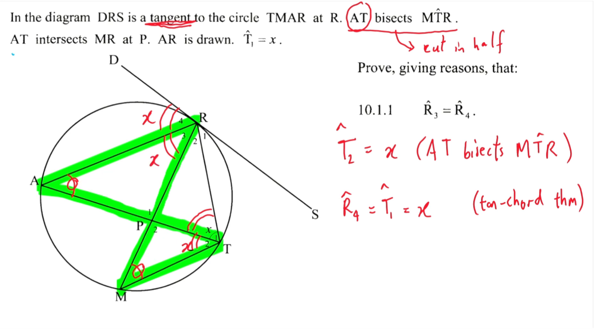R3 is also equal to x. Therefore we can say R3 is equal to T2, and your reason here would be angles in same segment. Further to this, we know T2 is x, therefore R4 is equal to R3, is